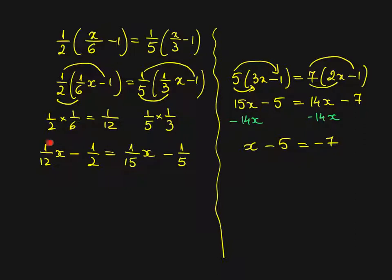I will do the same thing here. I have so many x's here and so many x's here. So I will subtract. It doesn't matter by which one. Minus 1 over 15x minus 1 over 15x. So what do you have here? How many x's you'll have? You'll have 1 over 12 minus 1 over 15x. Same as here, you had 15 minus 14x.